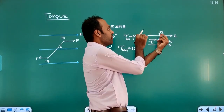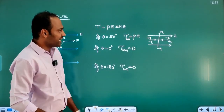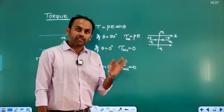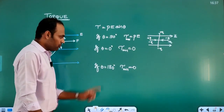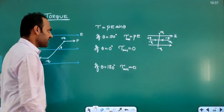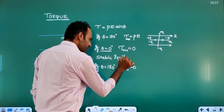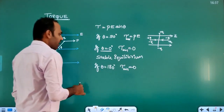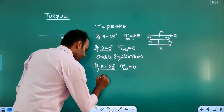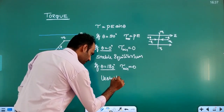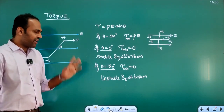When the dipole is placed with plus q on one side and minus q on the other side such that the dipole moment is anti-parallel to the electric field, the torque is still 0. When the dipole is placed parallel to the electric field it will be in stable equilibrium, and when the angle is 180 degrees — that is, anti-parallel to the electric field — the dipole is in unstable equilibrium.